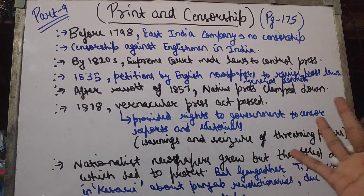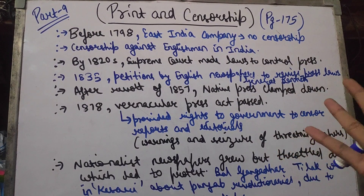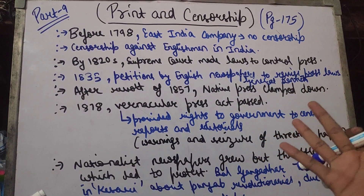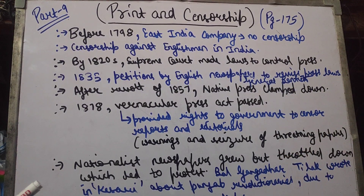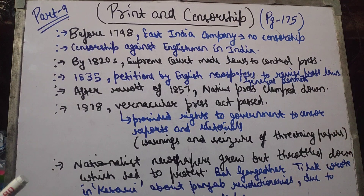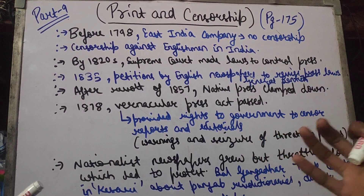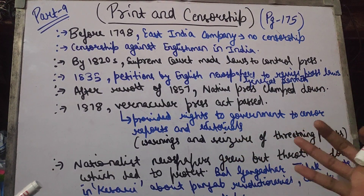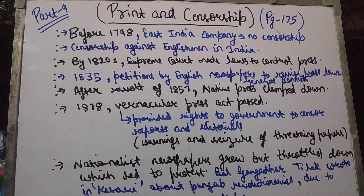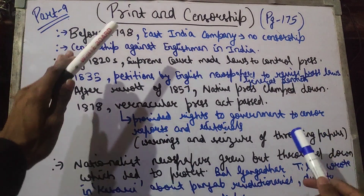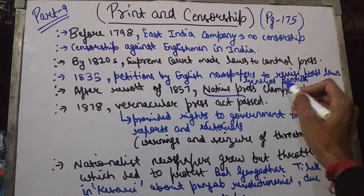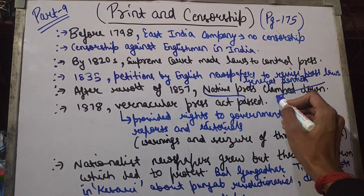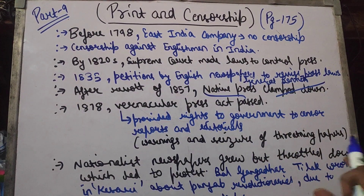After that, the revolt of 1857 happened — you know the 1857 revolt — which was the first revolt against the British government. When it started, people's feelings came out and the press printed them. Most people printed their feelings. The revolt was rising, so the native press — the Indian press — was completely clamped down and cut down. It didn't work anymore.